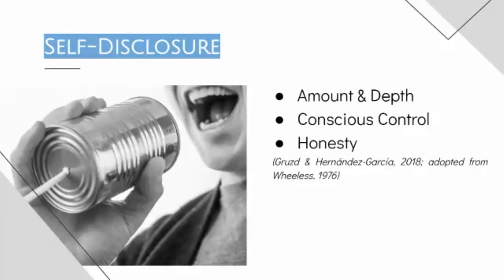Looking at the specific constructs — self-disclosure, as you may be aware, is the communication practice of disclosing personal information. The self-disclosure scale, adapted to the social media context, can be used to measure three different dimensions of self-disclosure: amount and depth, which is the length and level of intimacy of the disclosure; conscious control, which is the intentionality of the disclosure; and honesty — how truthful is this disclosure?